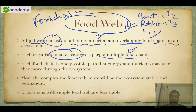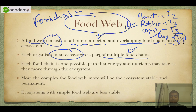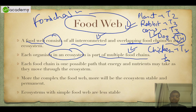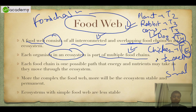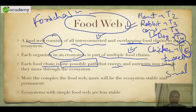If you eat cows or buffalo you come at T3. If you eat dog — if you are very adventurous — you come at T4. Even if you eat chicken you come at T4, because chicken feeds on insects, insects feed on smaller insects, so you actually come at T5. Every food chain is one possible path that energy and nutrients may take as they move through the ecosystem — it's a hypothetical concept.